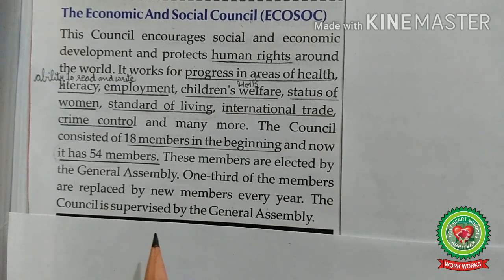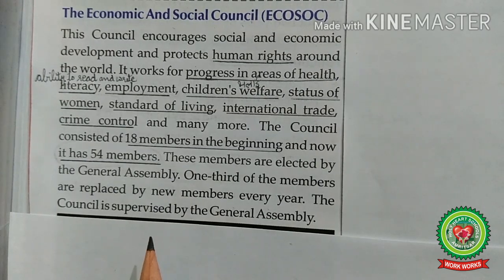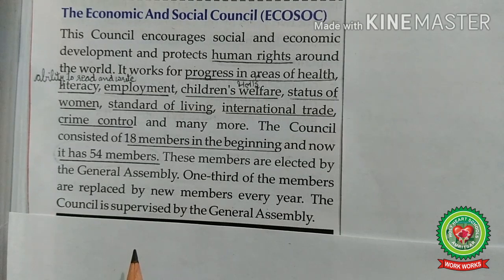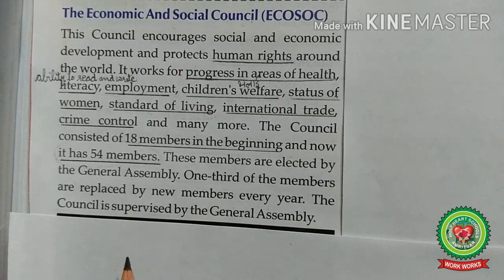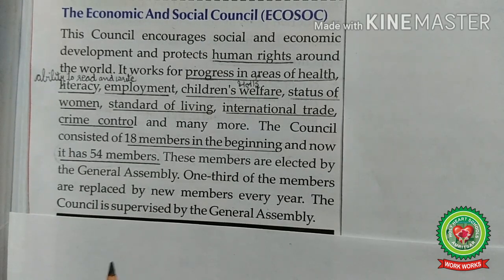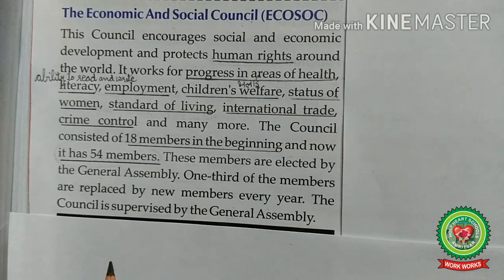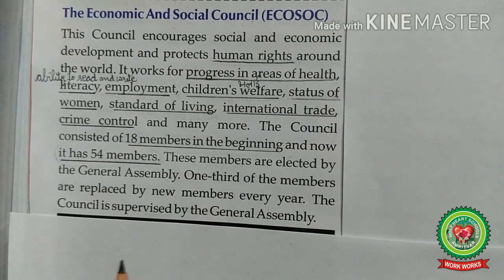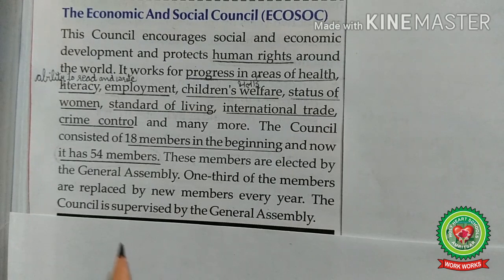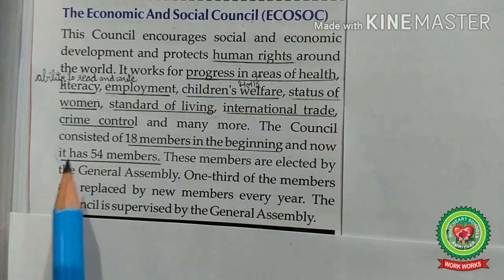The Economic and Social Council holds one session of four weeks each year in July, since 1998, and the president of the council is elected for a one-year term at the beginning of each new session. Mona Juul is the current president of the Economic and Social Council and was elected on July 25, 2019.